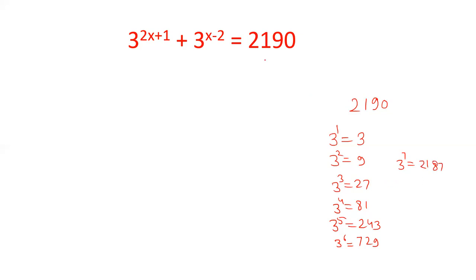Now friends, this number 2190 can be written as 2187 plus 3. So directly we can write 3 power 2x plus 1 plus 3 power x minus 2 equals 2187 plus 3. These are the two different powers of 3. This is 3 power 7 and this is 3 power 1.